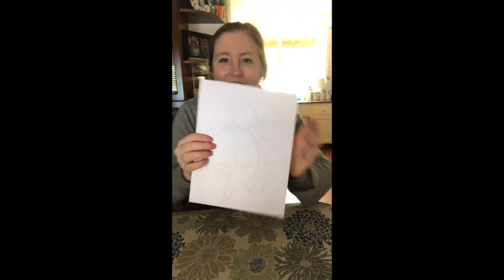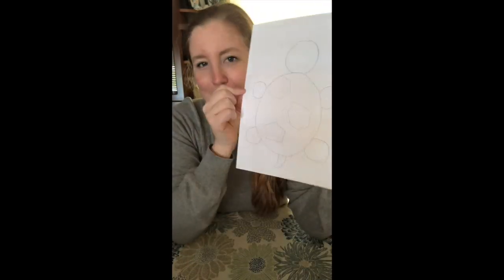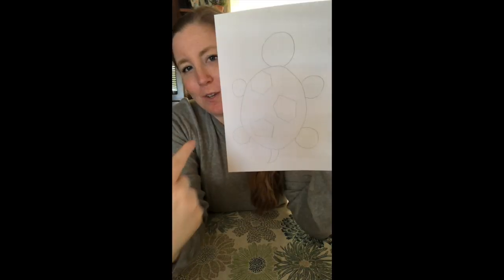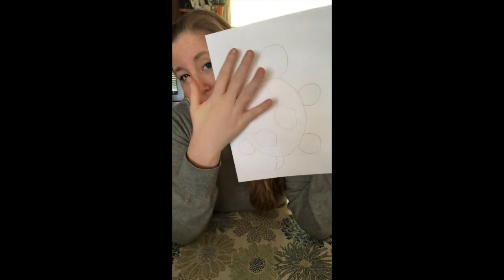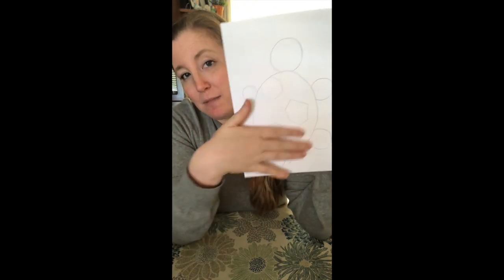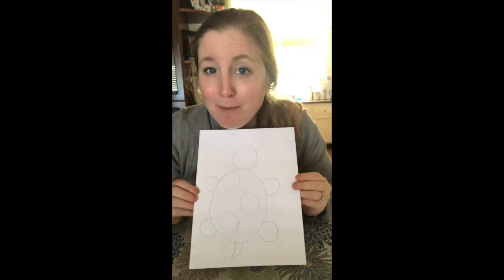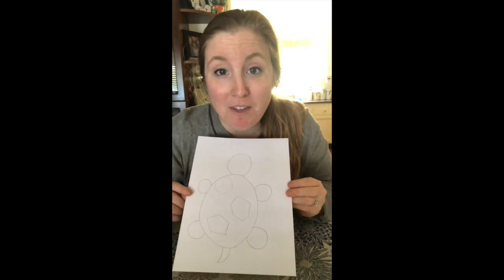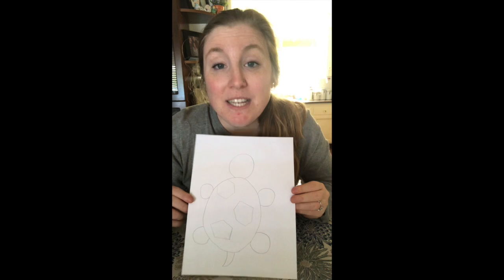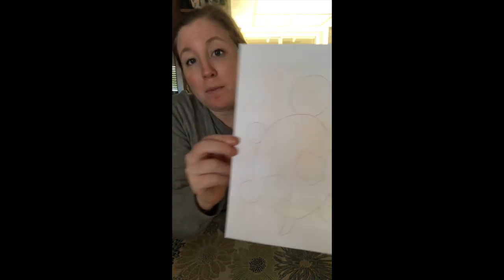Okay so here's my turtle. I'm not the best artist but this is my little turtle. You can see I did kind of like the top view of the turtle — his back, his legs, his head, and his little tail. You guys can go ahead and draw whatever animal you'd like: a cat, a dog, a kangaroo, a lizard. Whatever animal you'd like, draw it with pencil.